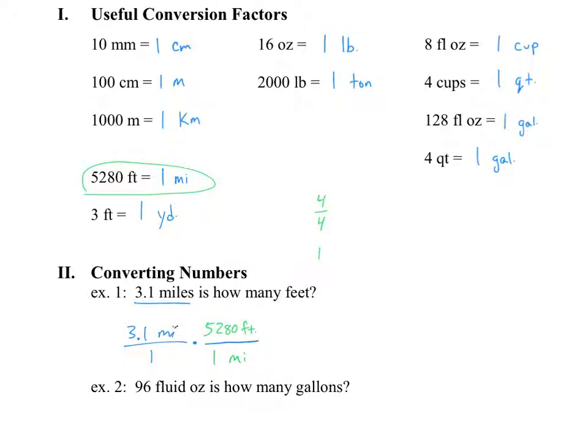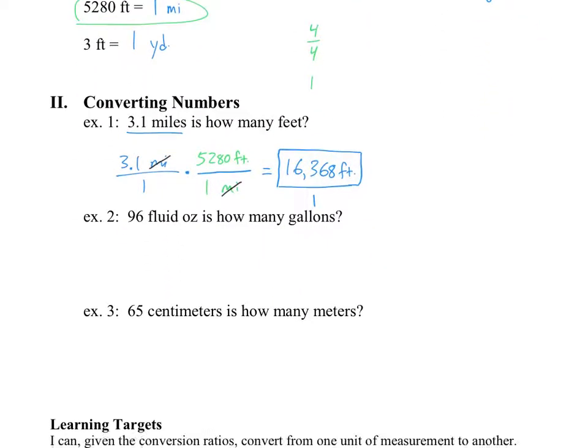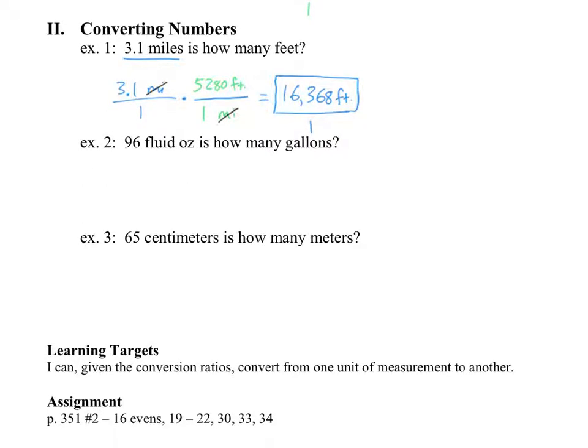And my miles will dutifully cancel out, just like they should. And when I do that, I get 3.1 times 5,280 in the numerator. So that gives me 16,368 feet. And in the denominator, I just have a 1. So we can kind of cancel out that 1. That 1 doesn't matter. And we now know there's 16,368 feet in 3.1 miles, which will be the distance some of you will be doing in cross-country someday if you choose that sport.